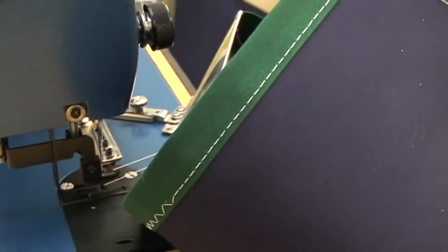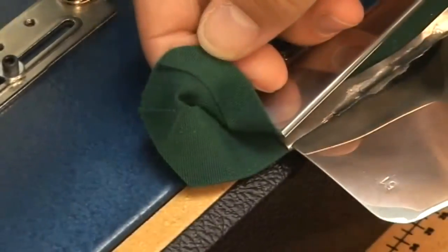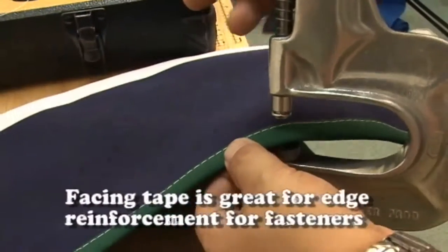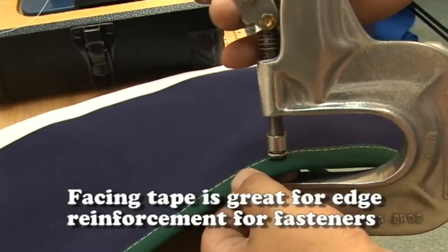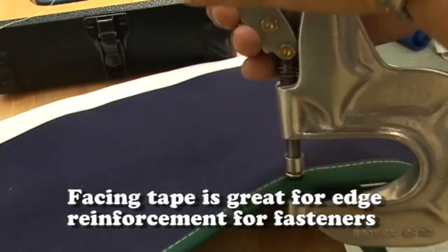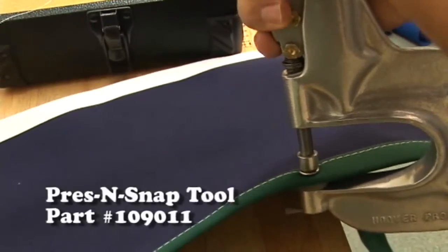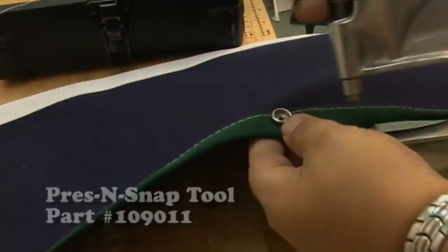It's fast and easy, great for enclosures. Here's what the Sunbrella 2 inch facing looks like on the inside. It's great for edge reinforcement for fasteners as shown here with the press and snap tool. We're just installing one snap to show you how it works.